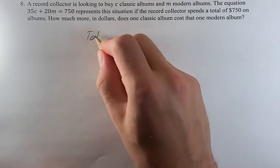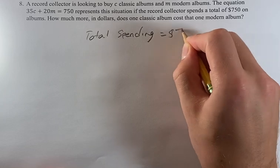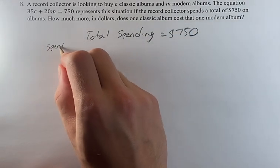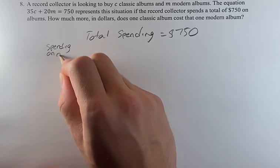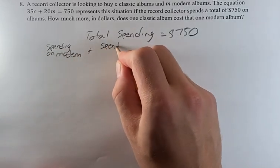So the total spending we know is $750 and that consists of classic albums and modern albums. So the spending on modern plus the spending on classic is going to equal to that total of $750.